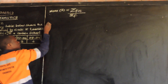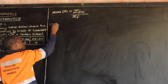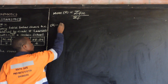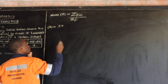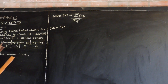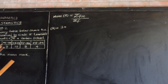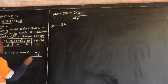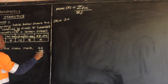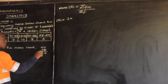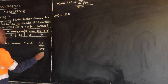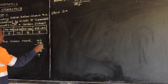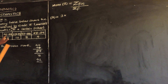So we can say x-bar, which is the mean, is equal to — now, what is our first frequency? Our first frequency is 3, so I am going to put 3 multiplied by the midpoint. To find the midpoint, we need to add 40 plus 44, then divide by 2. So 40 plus 44 gives 84, divided by 2, gives a midpoint of 42.